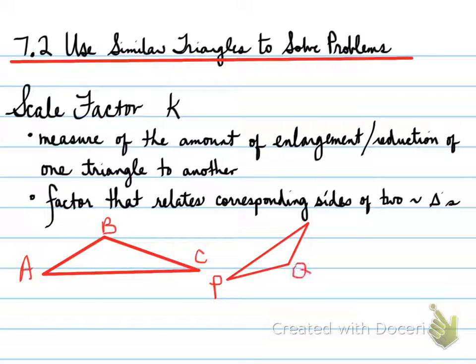...factor that relates corresponding sides of two similar triangles. So if we have two triangles as such here, ABC and PQR, and I tell you that ABC is similar to PQR, that means the sides are directly proportional.